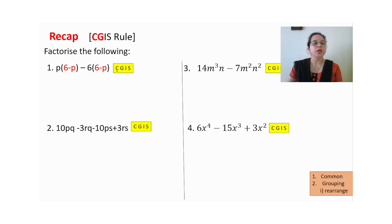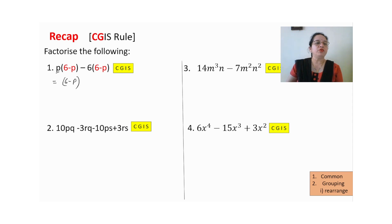First one is common. Can you take something common here? Yes, we can. What is common? 6 minus P. So what is left over here? P, then minus, and then 6. So this is the answer — make a right tick over here.